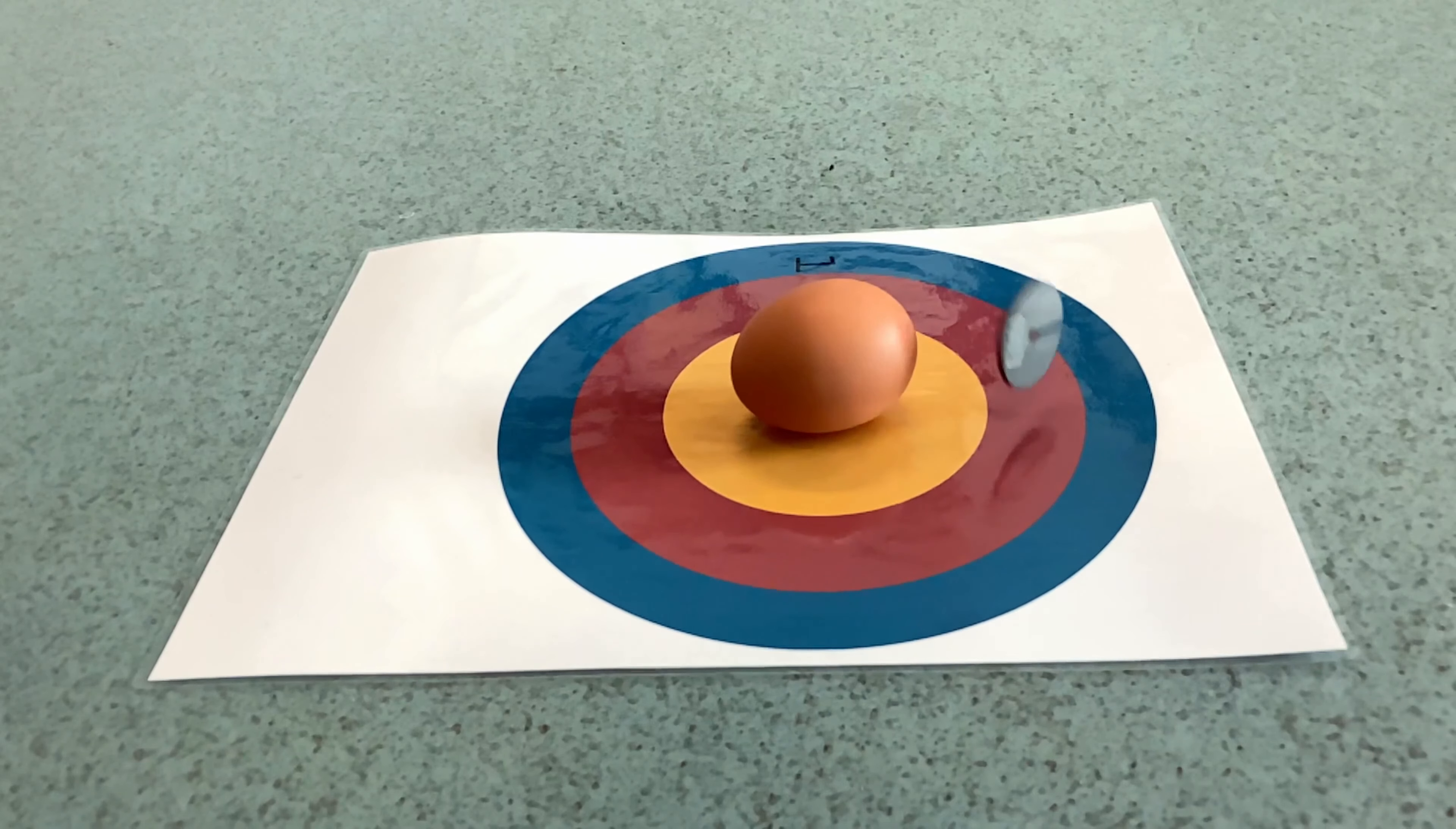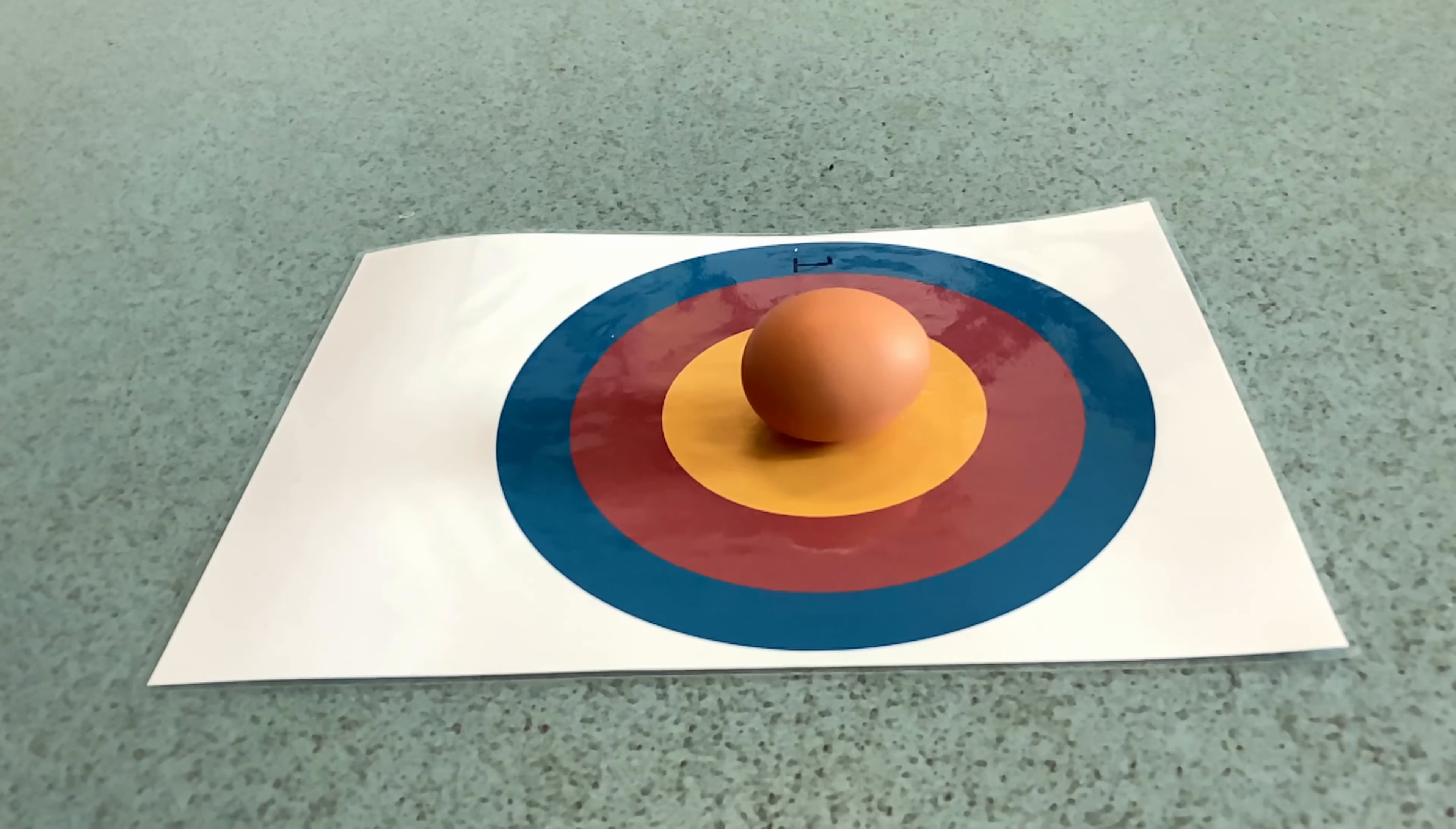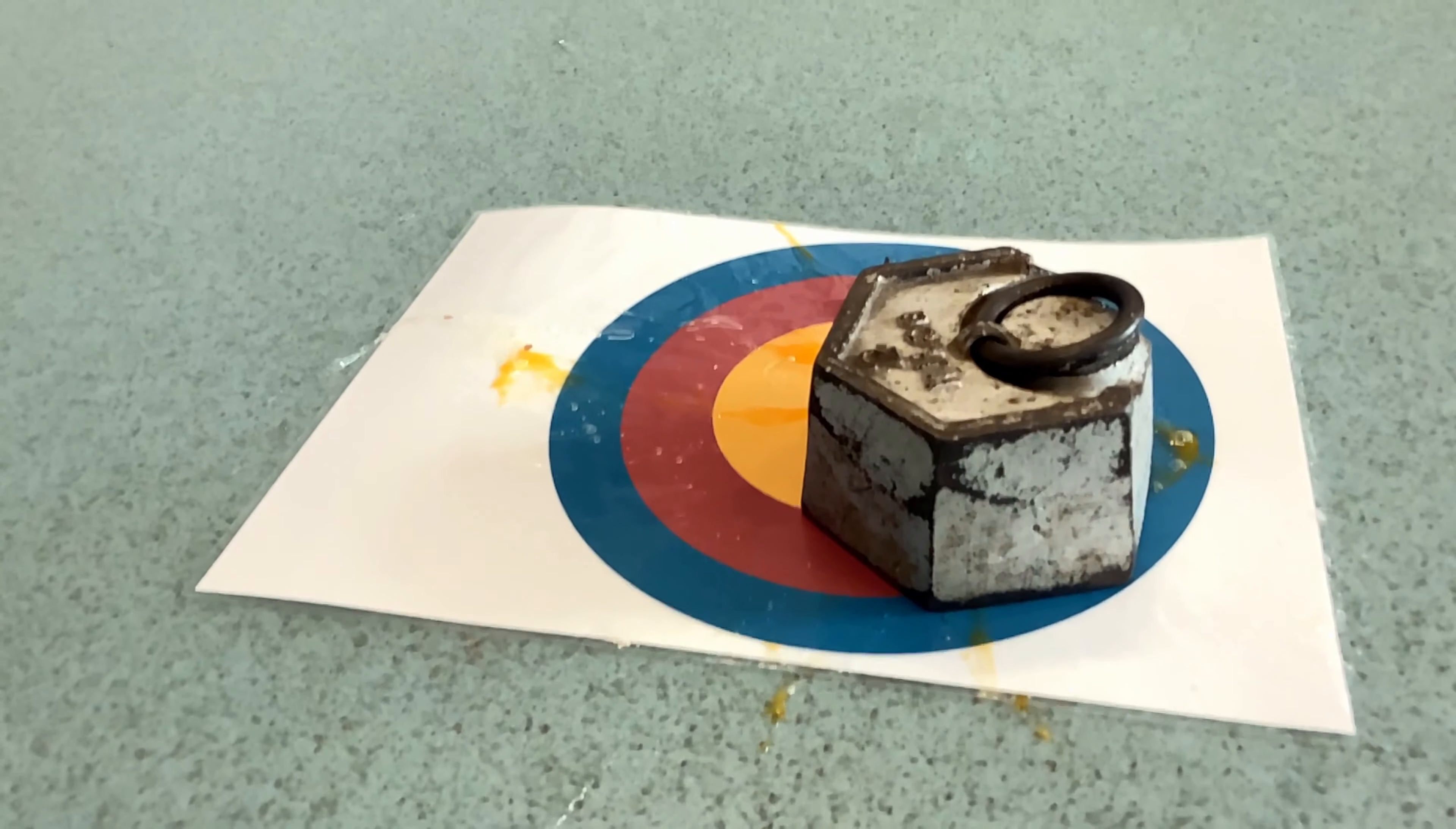Now, imagine I did an experiment where I dropped different sized masses on the egg to see if it smashed. The bit that I chose beforehand, the bit I put in, is called the independent variable. And the bit that I record as my results is the dependent variable.